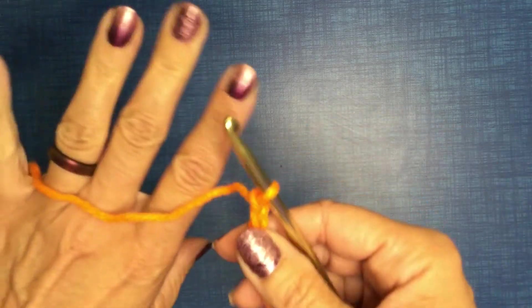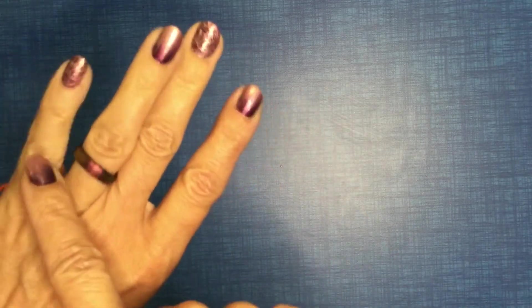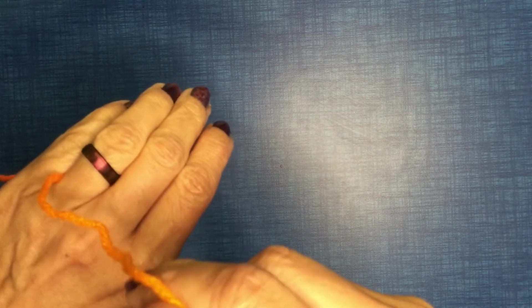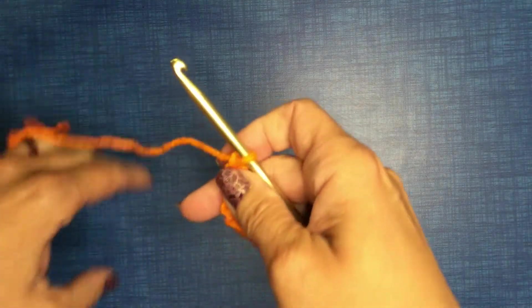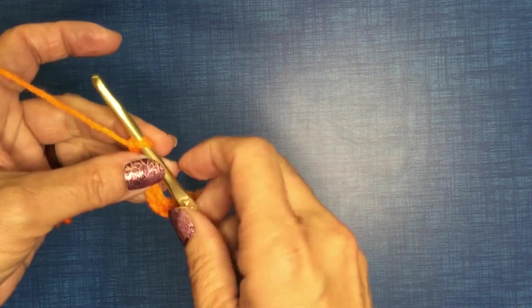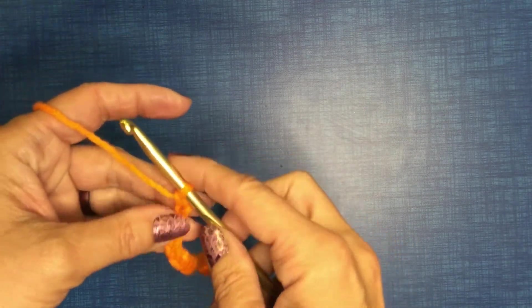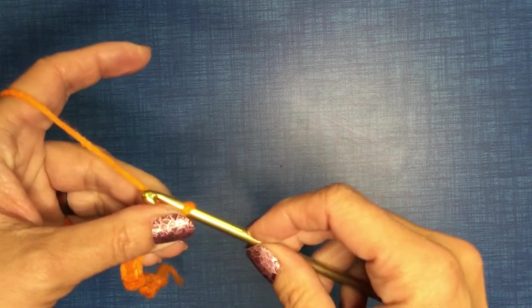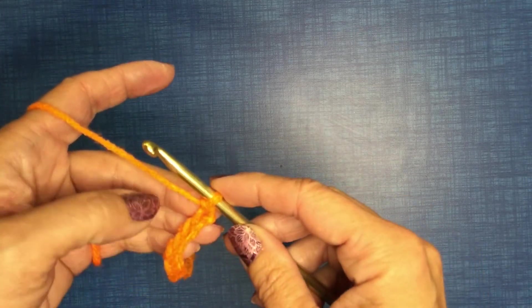Okay, so some reminders. This space in here, how tight or how loose you have it is part of your tension. How tight you pull this right here next to your hook is part of your tension. So if you're pulling too tight, it's going to make it really hard to get your hook through your holes.